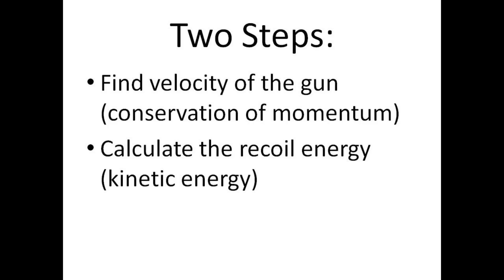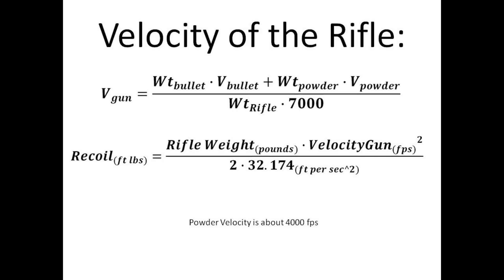It's a two-step process. First you find the velocity of the gun using conservation of momentum — what goes out also comes back. Then once you have the gun's velocity, you calculate the recoil energy. The top equation is essentially mass times velocity equals mass times velocity: the bullet exits and the powder exits, you add those two together, then divide by the weight of the gun converted to grains to get the gun's velocity. The bottom equation is kinetic energy — one-half mass times velocity squared — converted to pounds-force using gravity.